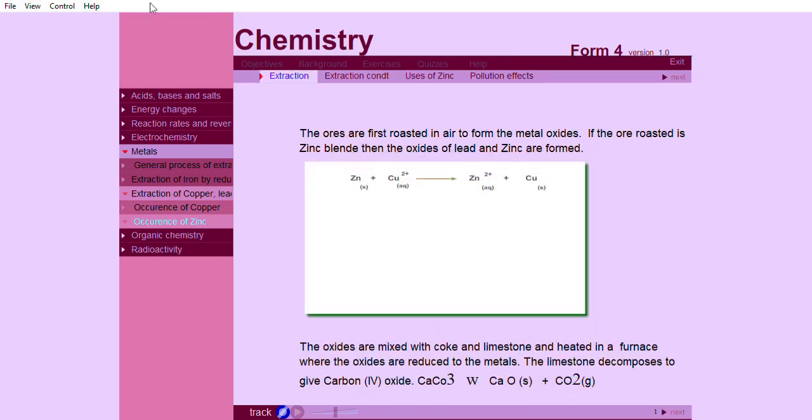The ores are first roasted in air to form the metal oxides. If the ore roasted is zinc blend, then the oxides of lead and zinc are formed. This is given by the following equations.